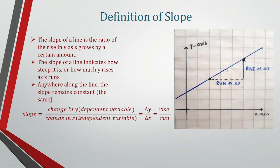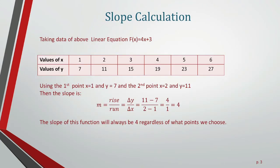Let's calculate slope with the linear equation f(x) = 4x + 3. This equation we discussed earlier. From its solution table, taking two points of x and y: